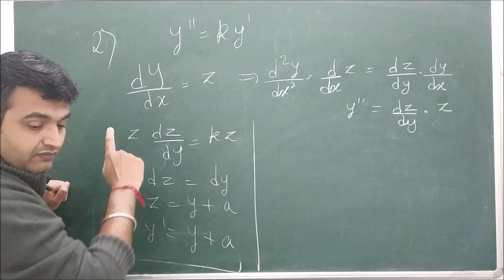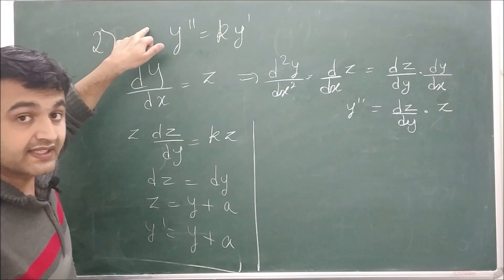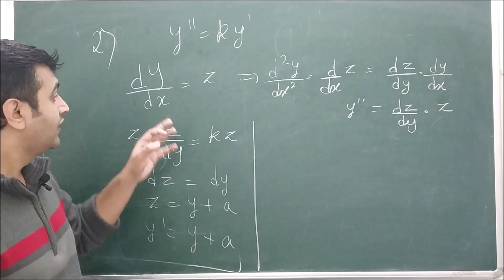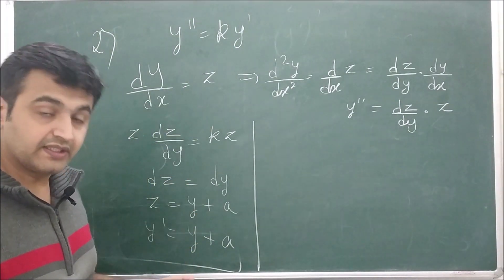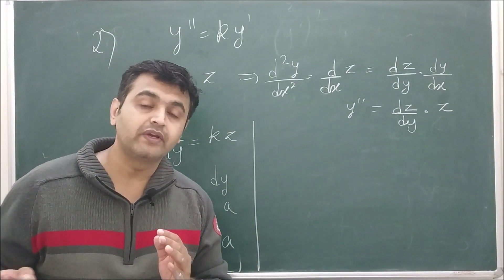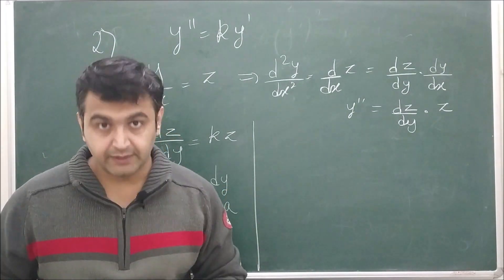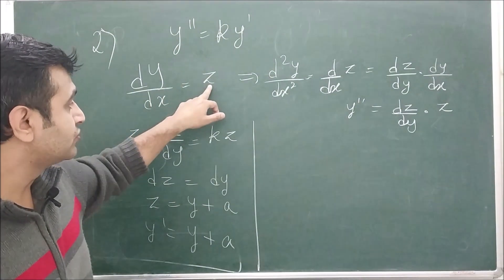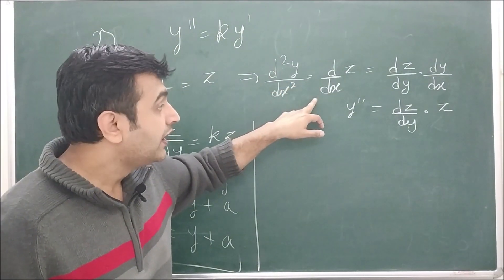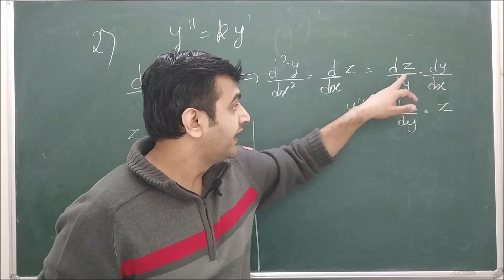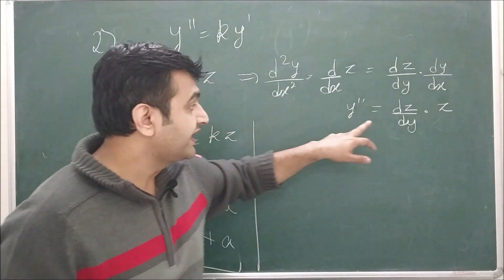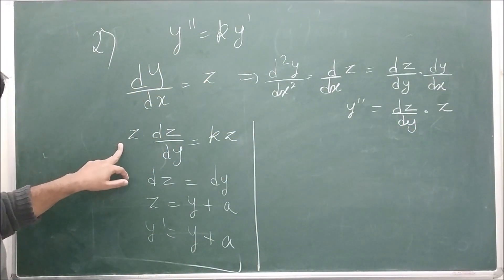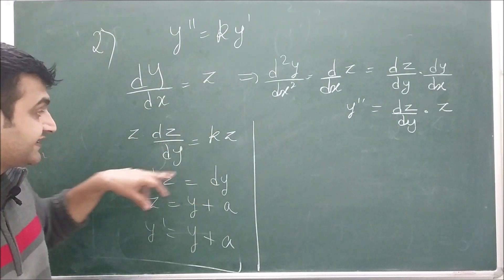Since this does not involve x explicitly, it falls into the second criteria. We put y prime equal to z. Now y becomes the independent variable and z becomes the dependent variable. Taking the derivative: dy over dx equals z, and by the chain rule, y double prime equals dz over dx equals z times dz over dy. Substituting gives z times dz over dy equal to k times z.